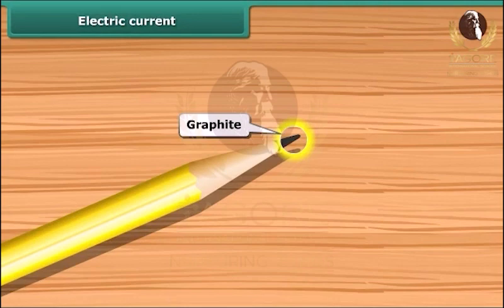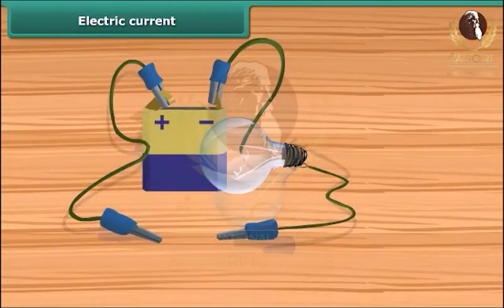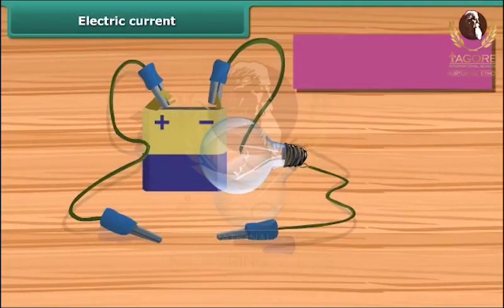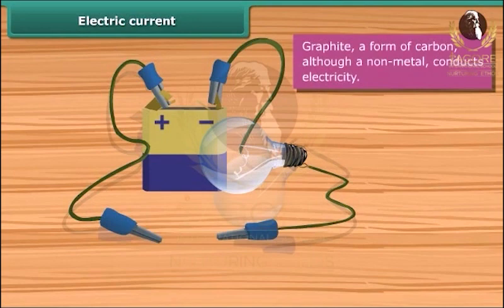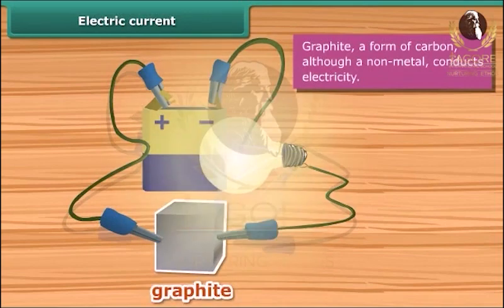It can be tested whether a given material is a conductor of electricity or not by placing the given material between the free ends of wires in an electric circuit. Bring the free ends of the two wires close, then let them touch each other. If the bulb glows, the material is electrically conducting; otherwise it is an insulator.